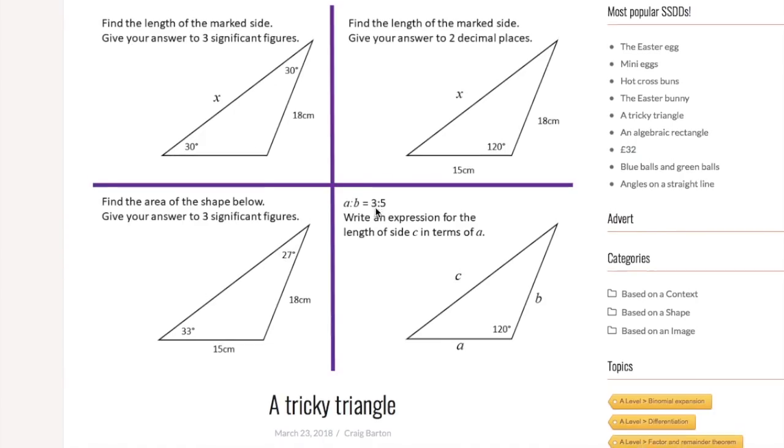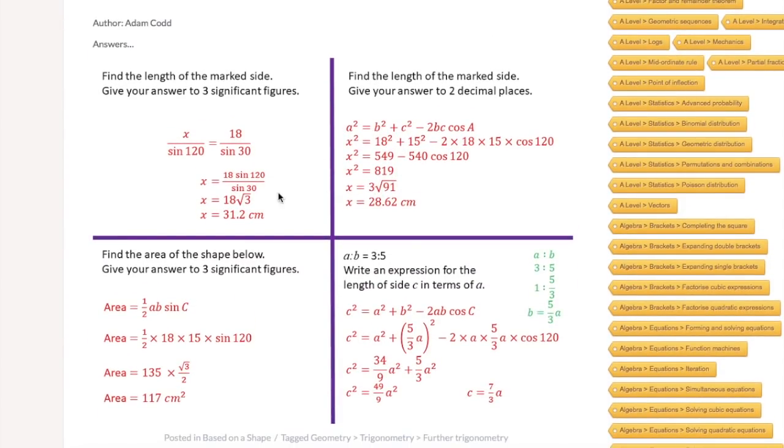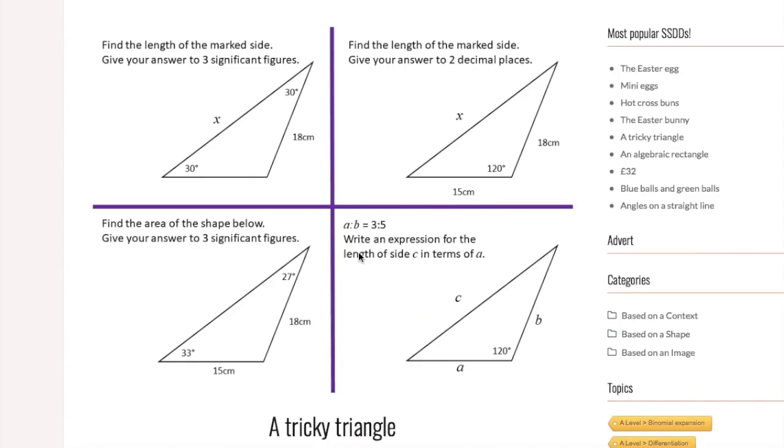So on this website also the solutions, the worked solutions are provided and you can see the first problem you needed the sine rule, the second one is the cosine rule, the third one is the sine rule for the area of a triangle and the last one is the cosine rule again after rearranging that ratio in terms of a. This is a really good resource for helping you to recognize the strategy needed for the question which in an exam I believe is one of the most important things you need to solve the problem.